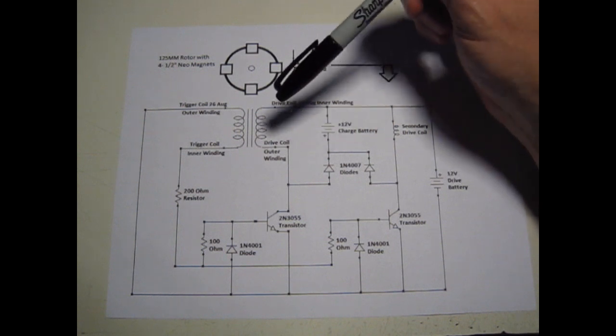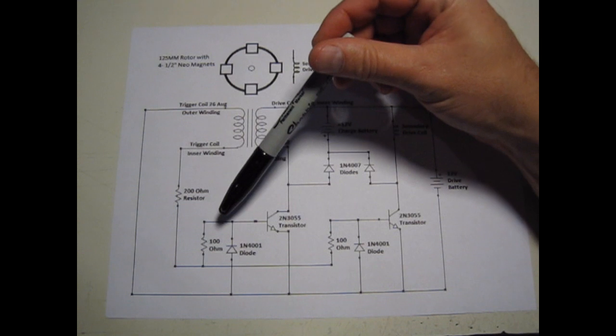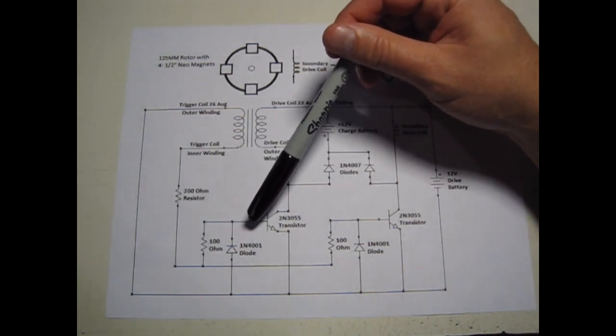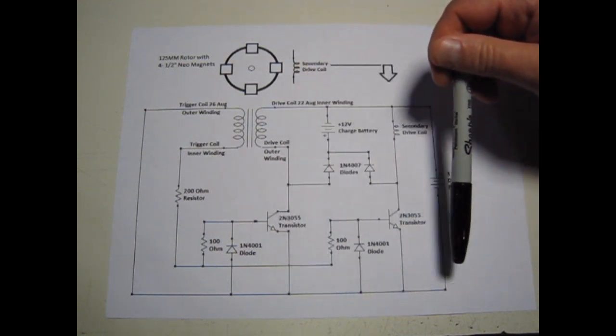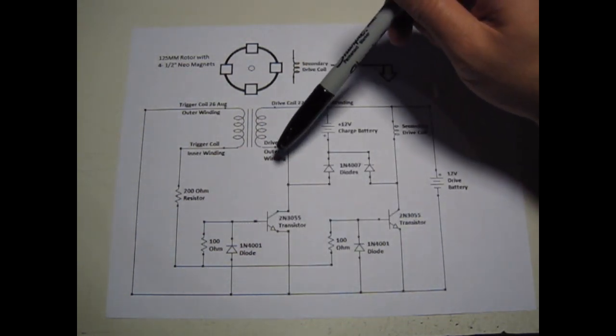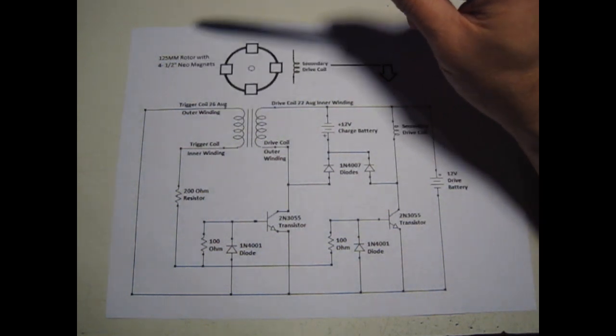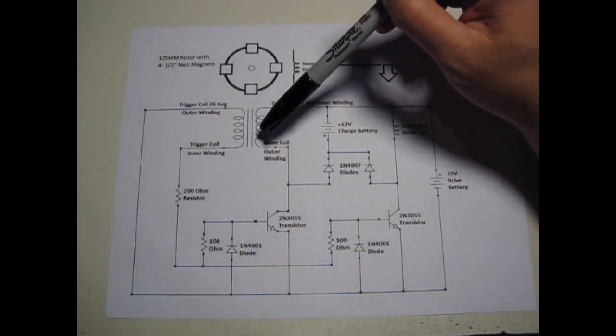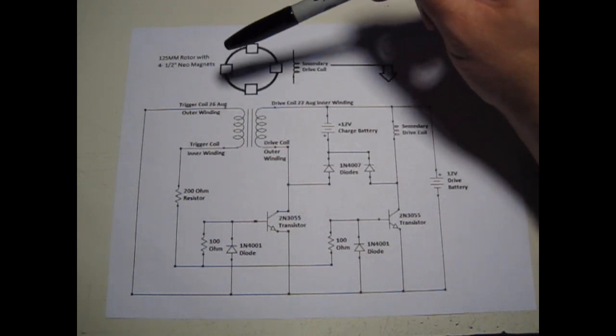That's what's going on until the trigger coil develops enough energy to trigger the transistor around three volts. Then it shorts this part of the circuit out, turns the drive coil into an opposer for the magnet, and pushes the magnet out of the way until the charge is gone. And then it repeats that cycle every time the magnet comes to pass.